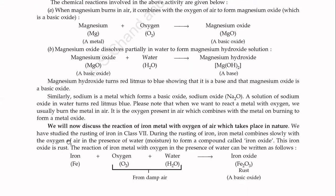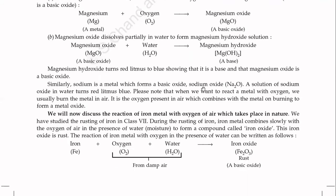Similarly, sodium is a metal which forms the basic oxide sodium oxide, Na₂O. A solution of sodium oxide in water turns red litmus to blue. Please note that when we react a metal with oxygen, we usually burn the metal in air. It is the oxygen present in air which combines with the metal on burning to form a metal oxide.